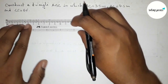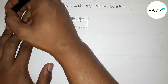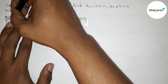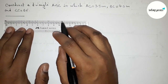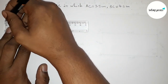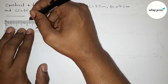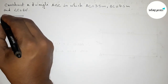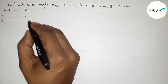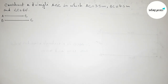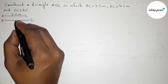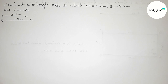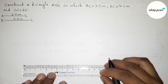First of all, let us draw the two given sides: 3.5 centimeter and 4.5 centimeter. This is the 3.5 centimeter line segment, and this is the 4.5 centimeter line segment. This one is AC and this one is BC, so AC equals 3.5 centimeter and BC equals 4.5 centimeter.